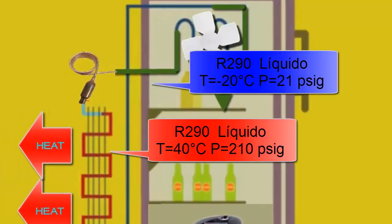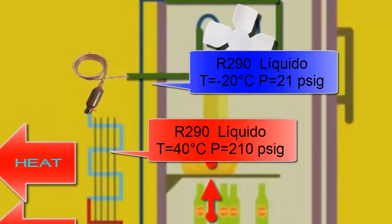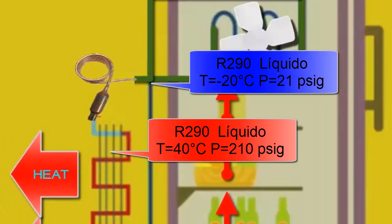The R290, now in a liquid state and at a temperature close to ambient, exits the condenser and goes to the capillary tube to restart the cycle.